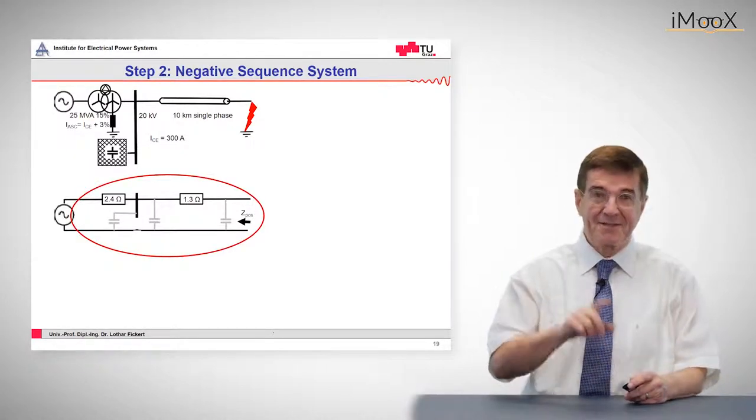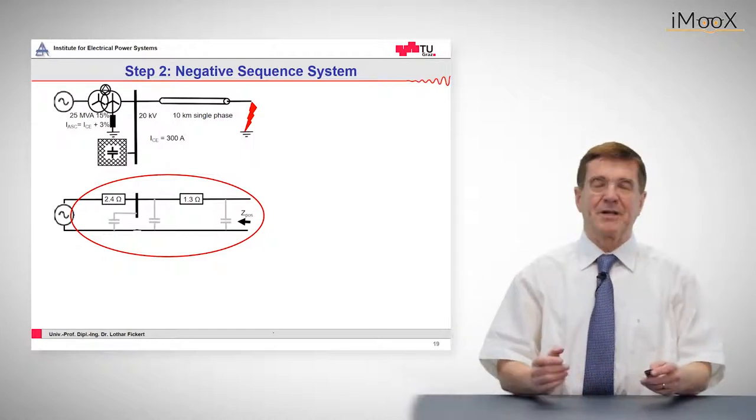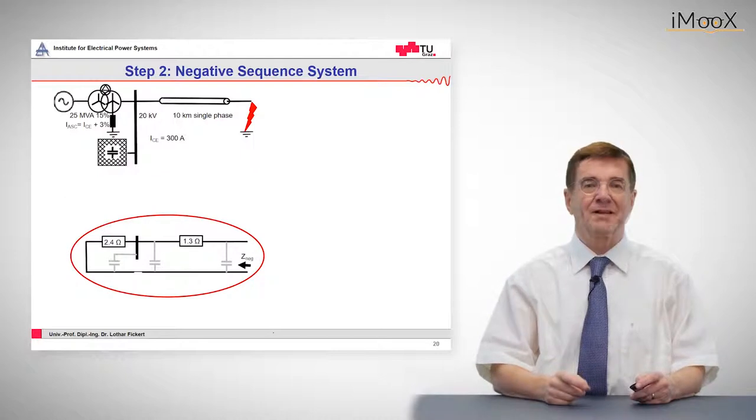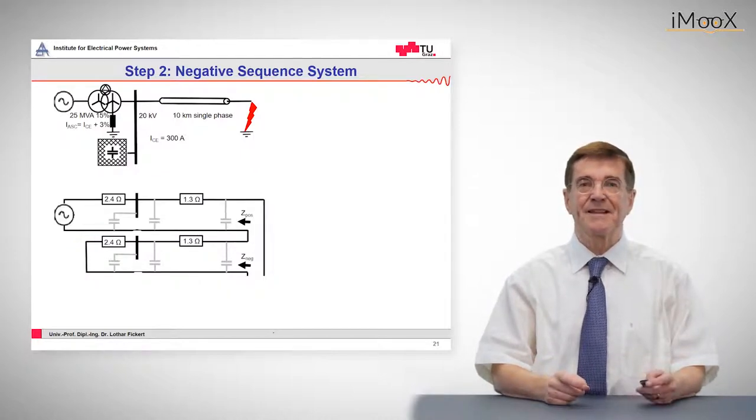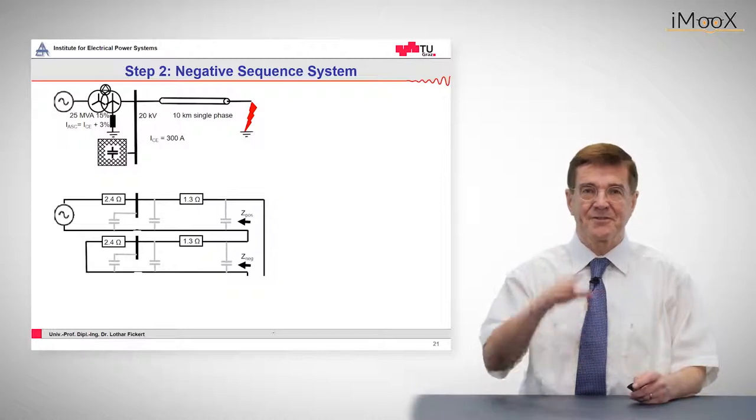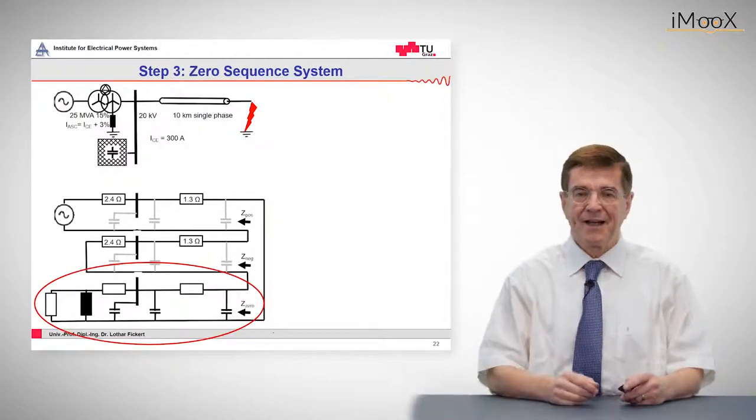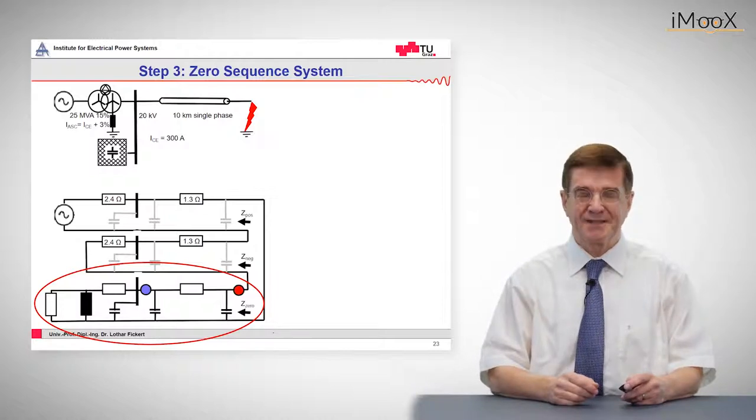So that was the positive sequence system. The negative sequence system, easy to remember, is in practical applications identical to the positive one. So we have these two, we connect them in series, and the last missing link is the zero sequence system which is shown here. And now we go into greater details.